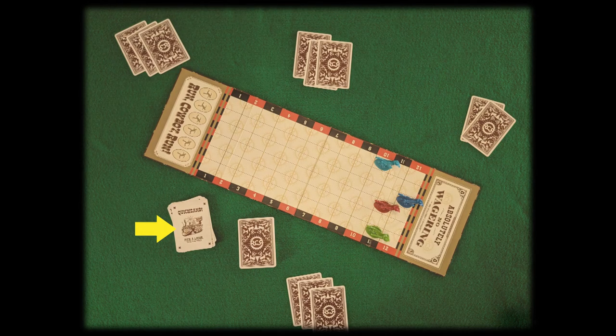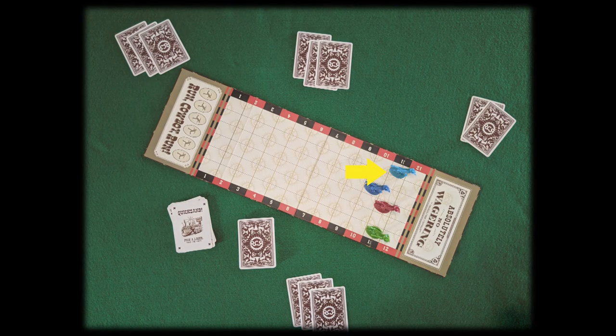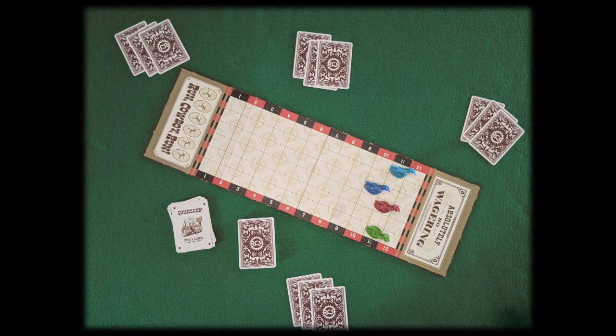Player number three has just played a hazard card. She moves player number two's cowboy back two spaces, moves her cowboy one, takes a new card, and takes the trick.